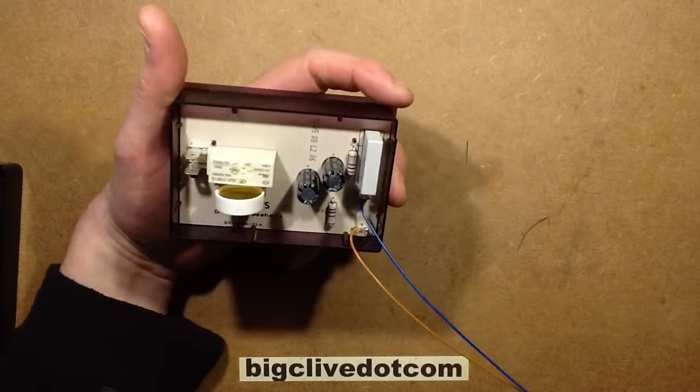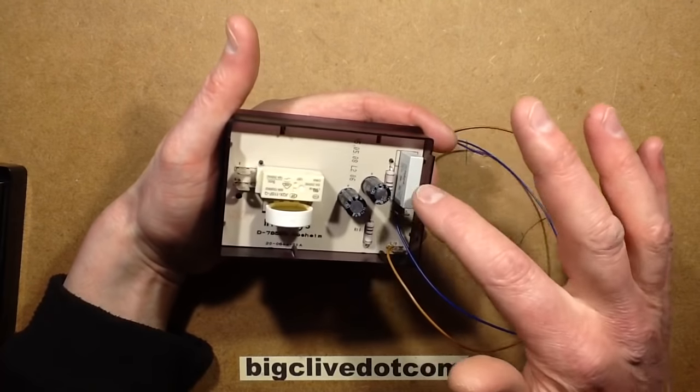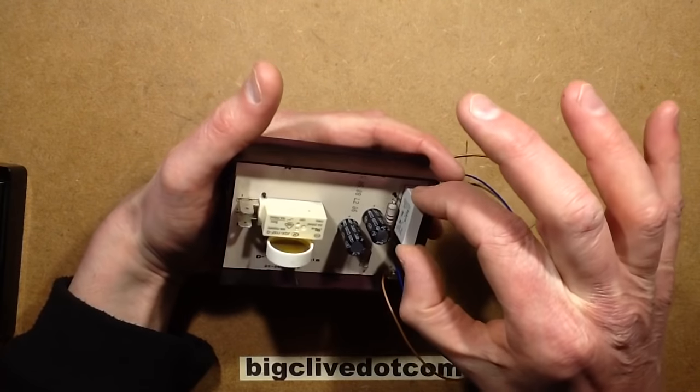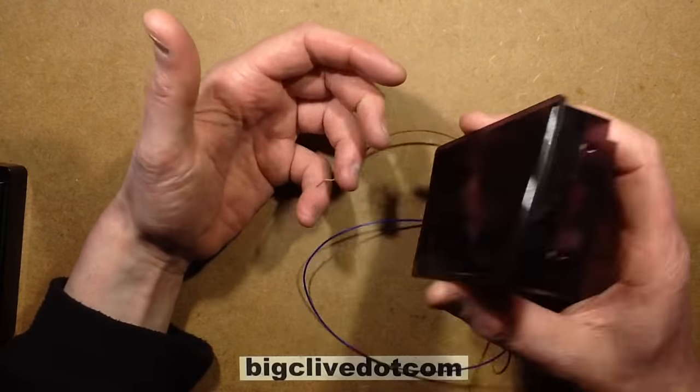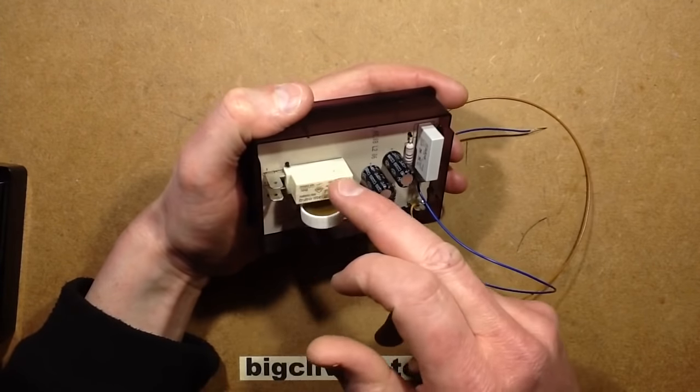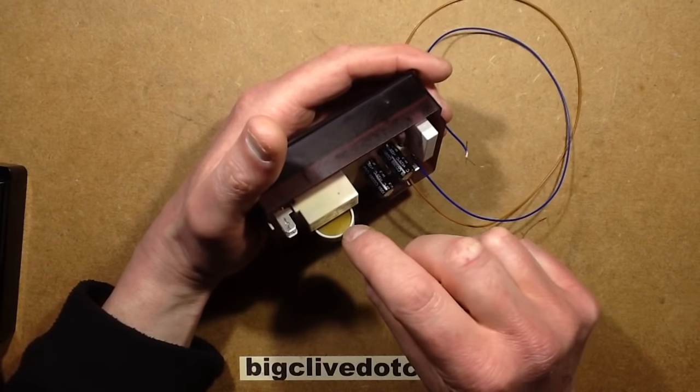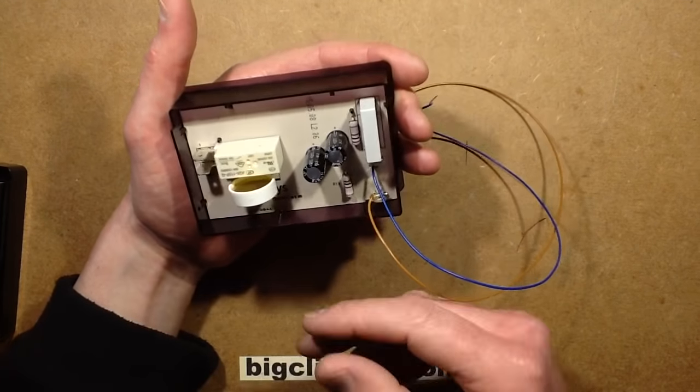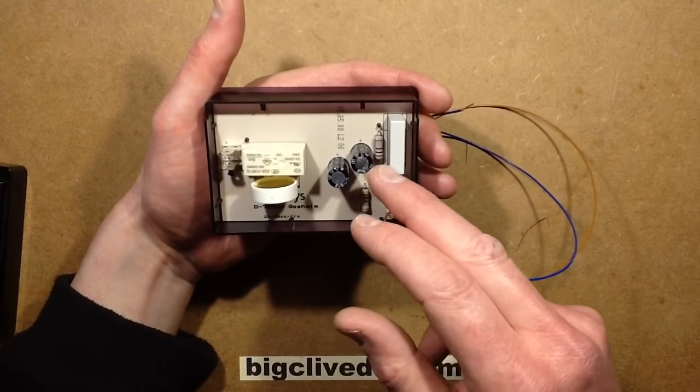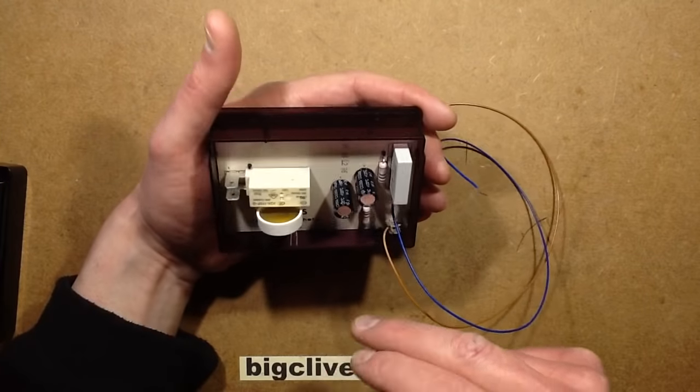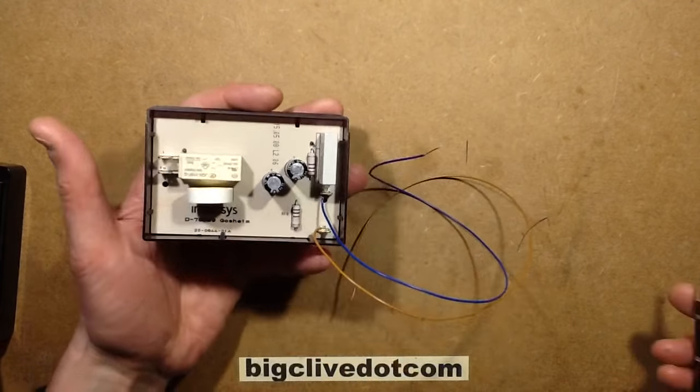Let's take a look at the back. I'm guessing that this might be a capacitive dropper, not 100% sure though. There's a relay here with two volt-free contacts, a piezoelectric sounder, and on the back are the terminals, two capacitors which I'm guessing are power supply capacitors, and a couple of resistors. Let's open this.